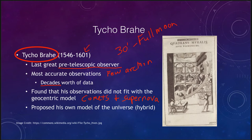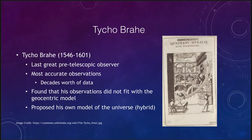Tycho proposed his own model of the universe, different from both the geocentric and heliocentric theories. He did not accept the heliocentric theory because of parallax — being the most accurate observer of his time, he was confident that if parallax could be measured he would have detected it. Since he did not measure parallax, he was convinced that the earth was not moving.